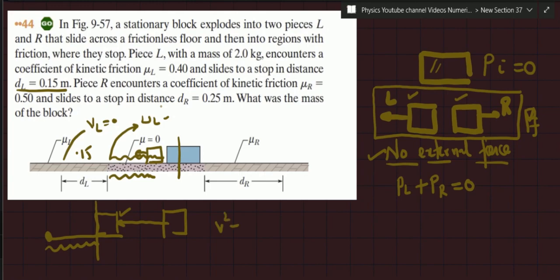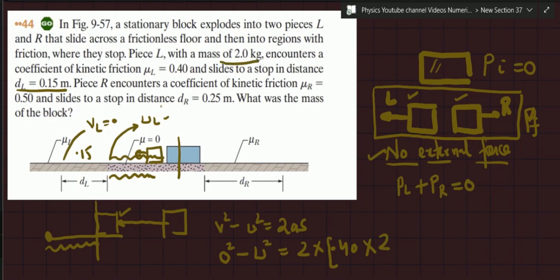To find that initial velocity u_L, I use v² − u² = 2as, assuming friction provides constant deceleration. The final velocity is zero; u is what we need to find. The frictional force is μmg. For the left block, μ_k = 0.40 and the mass is 2 kg. Dividing the frictional force by mass gives acceleration = μ_k × g = 0.40 × 10 = 4 m/s². The distance through which it moves in the frictional zone is 0.15 m.